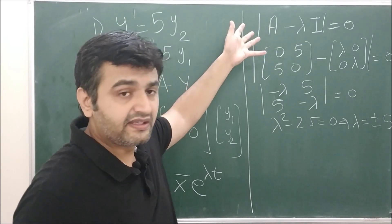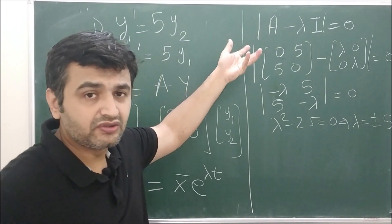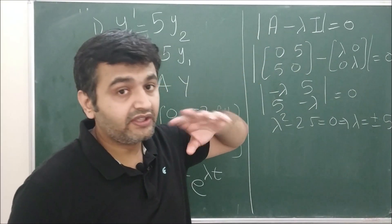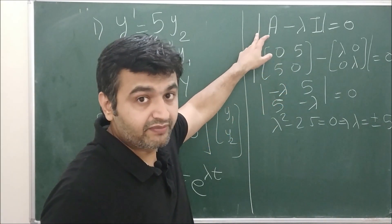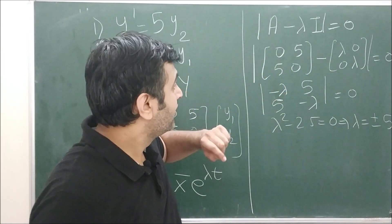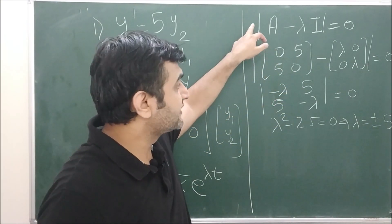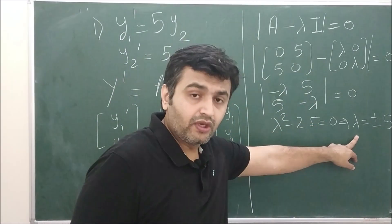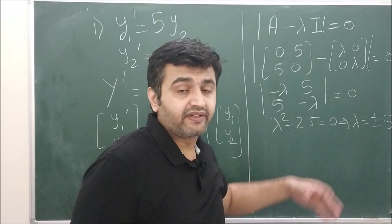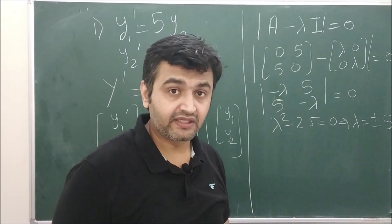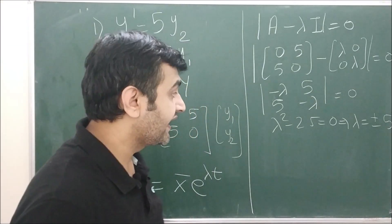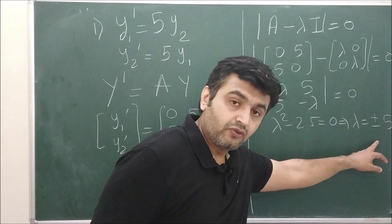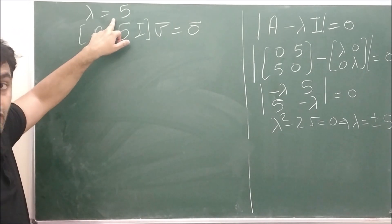The logic behind why this gives eigenvalues will take a lot of time to explain — when I record the lecture on linear algebra I will cover that. For now, keep in mind this is how you find eigenvalues. Once you have the eigenvalues, the next step is to find the eigenvectors for λ = 5 and λ = −5.